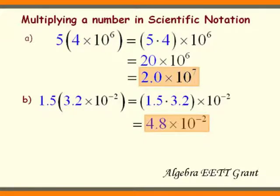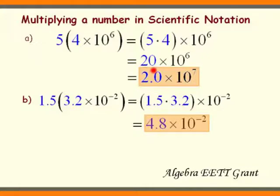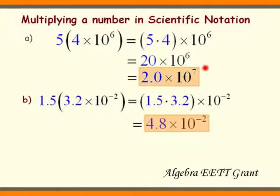Just some more examples. 5 times 4 times 10 to the 6th. We'll say 5 times 4, which is 20, times 10 to the 6th. But 20 is not in scientific notation, so I'm going to need to move this decimal one place to the left, which means I add 1 to the 6th. So we have 2.0 times 10 to the 7th.